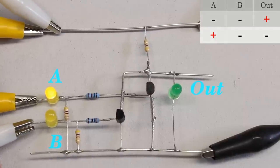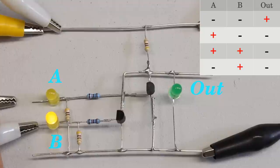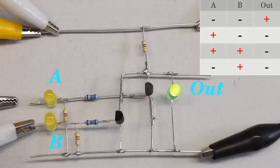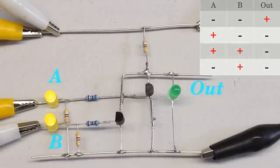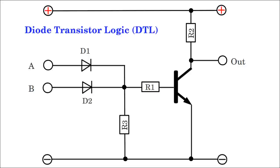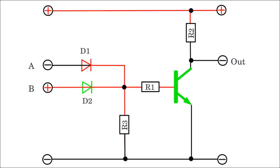The NOR gate consists of a set of parallel connected transistor switches driven by the logic inputs. The logic gating function of DTL circuits is performed by a diode network, while the amplifying function is performed by a transistor. DTL means diode-transistor logic. The circuits are composed of an AND respectively OR gate made of diodes with an inline transistor amplifying stage.